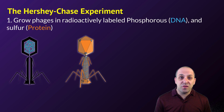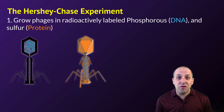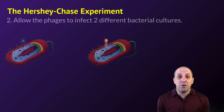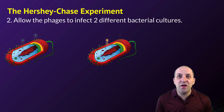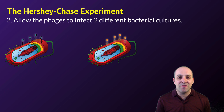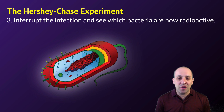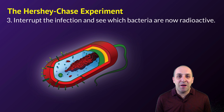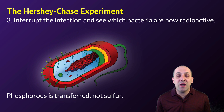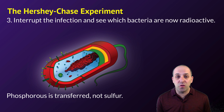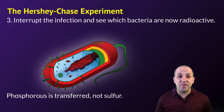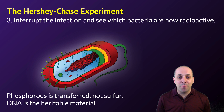After growing enough of these phages, they allowed the phages to infect two different bacterial cultures, and then they interrupted the infection process. They then looked to see which bacteria were now radioactive. The bacteria infected by phages grown in radioactive phosphorus had transferred their radioactivity into the bacteria, whereas the bacteria infected by phages grown in radioactive sulfur did not show the same transfer of radioactivity. The conclusion is pretty inescapable: DNA is the heritable material, not protein.